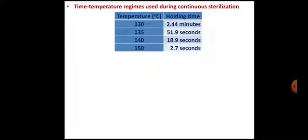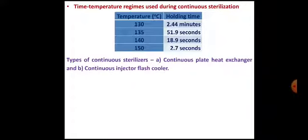This is the time-temperature regime for continuous sterilization of medium. Different temperatures are shown in the first column and holding time in the second column. At 130°C the holding time is 2.44 minutes only, whereas at the highest temperature of 150°C the holding time is only 2.7 seconds. As temperature increases, holding time decreases.